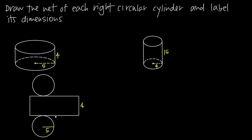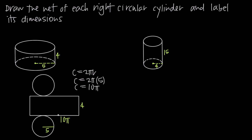The only other thing we could label is the width of this rectangular part. Remember, we're wrapping this rectangular part around itself to create the side of the cylinder. So the width of this rectangle is just going to be the circumference of the circle — the circumference of the base or the top. Circumference is equal to 2πr, where r is the radius. We know the radius is five, so the circumference is going to be 2π × 5, or 10π. So we can label the width of this rectangle as 10π, and now we have the dimensions of the net of this right circular cylinder.